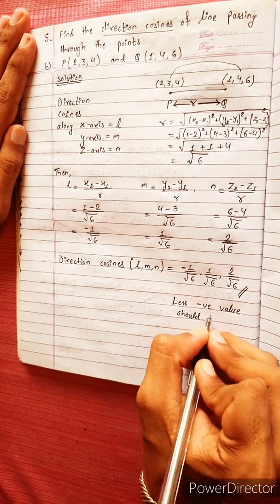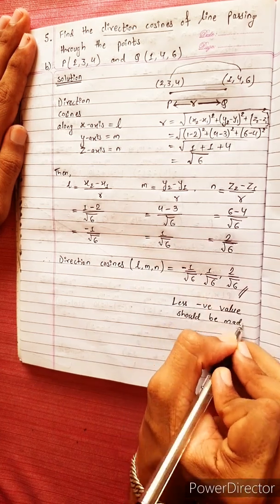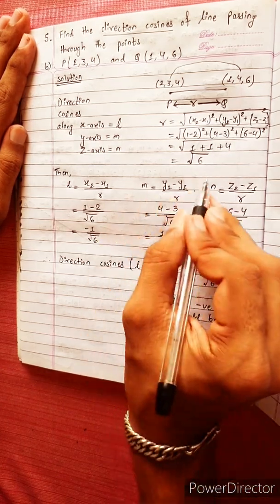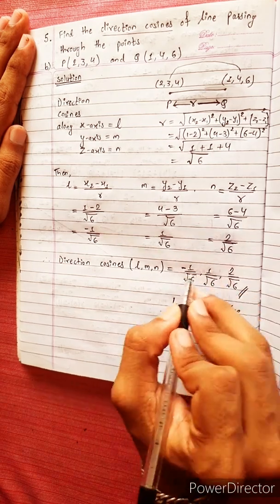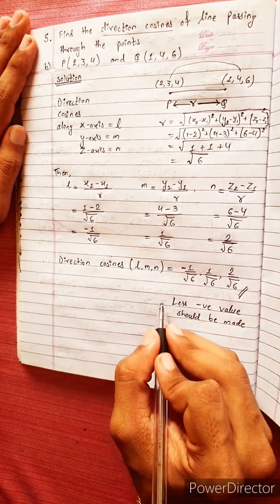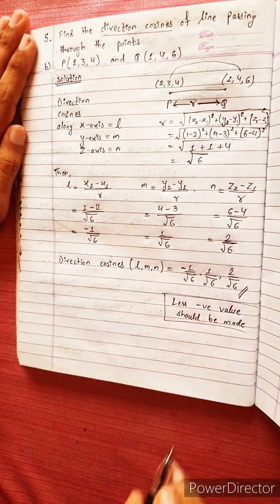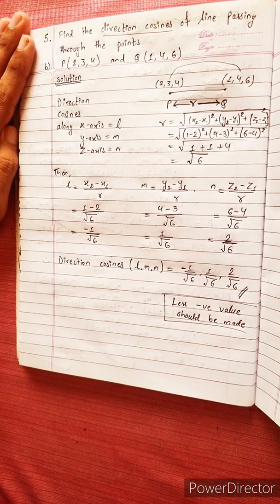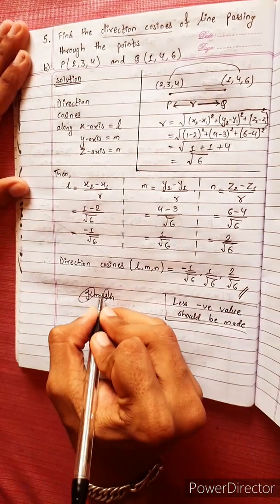So the direction cosines L, M, and N are minus 1 by root 6, 1 by root 6, and 2 by root 6 respectively.